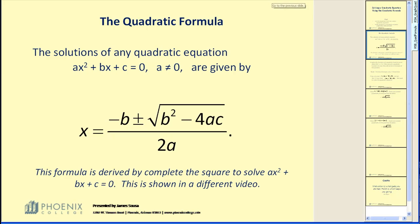The quadratic formula. The solutions of any quadratic equation, ax squared plus bx plus c equal to 0, where a does not equal 0, are given by x equals negative b plus or minus the square root of b squared minus 4ac all over 2a.